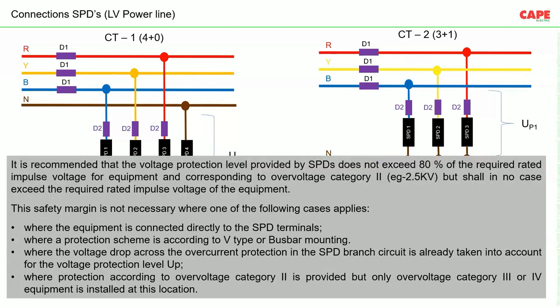It is recommended that the voltage protection level provided by the SPD does not exceed 80% of the required rated impulse voltage for the equipment. For example, if the impulse withstand voltage is 2.5 kV, the effective voltage protection level of the SPD should not exceed 2 kV. This is called the safety margin.